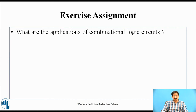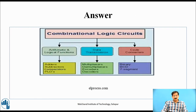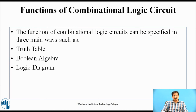Exercise assignment: What are the applications of combinational logic circuits? Combinational logic circuits cover arithmetic and logic functions, data transmission, and code conversion. Arithmetic and logic functions are obtained by adder circuits, subtractor circuits, and programmable logic devices. Data transmission can be achieved by multiplexer, demultiplexer, encoders, and decoders. Code conversion includes BCD, 7-segment, and others. The functions of a combinational logic circuit can be specified in three main ways: truth table, Boolean algebra, and logic diagram.